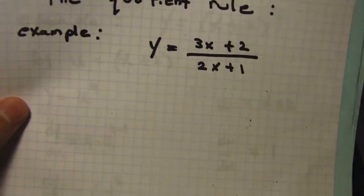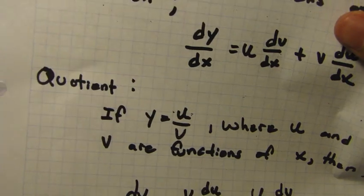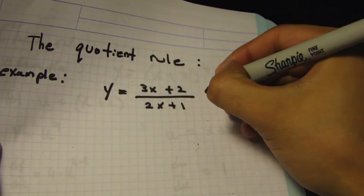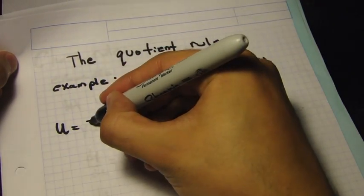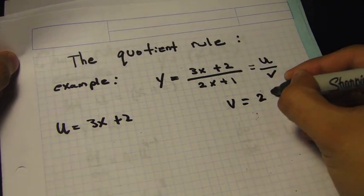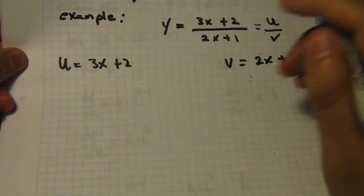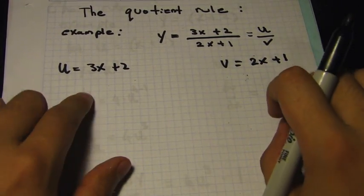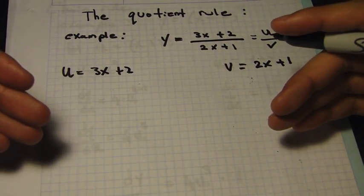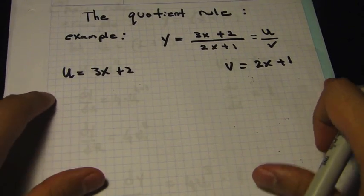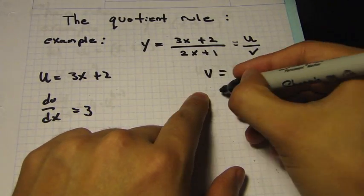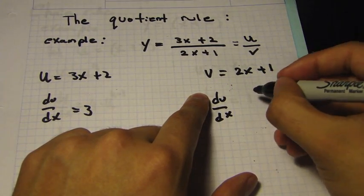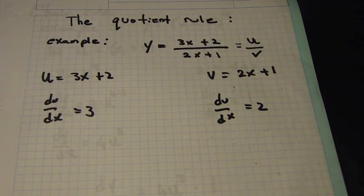For the example, we have a fraction, so the numerator equals u and the denominator equals v. We let u equal 3x + 2 and v equal 2x + 1. Now we differentiate separately: du/dx equals 3, and dv/dx equals 2. It's good to separate these on the page to make it easier to follow the steps and later plug into the formula.